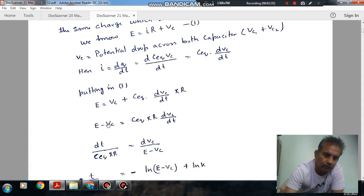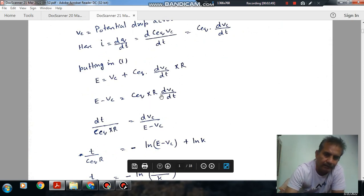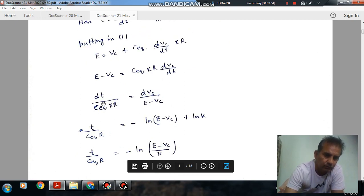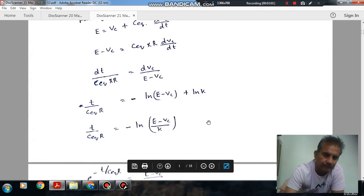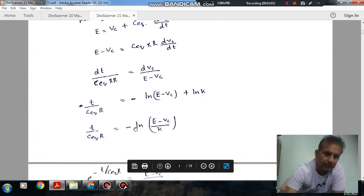This can be written as E minus V_C equals C equivalent times R times DV_C by DT. So DV_C over E minus V_C equals DT over C equivalent R. Now we can integrate it, giving T divided by C equivalent R equals minus LN of E minus V_C over K.